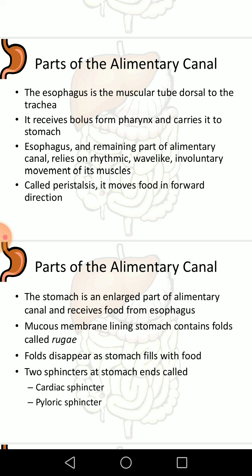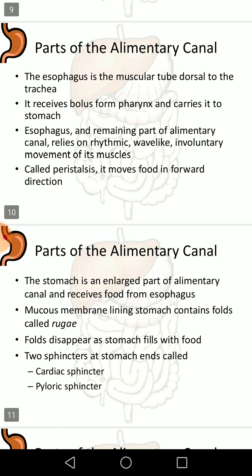The esophagus is the muscular tube dorsal to the trachea. It receives the bolus from the pharynx and carries it to the stomach. The esophagus and the remaining part of the alimentary canal rely on rhythmic wavelike involuntary movement of muscles called peristalsis, which moves food in the forward direction.